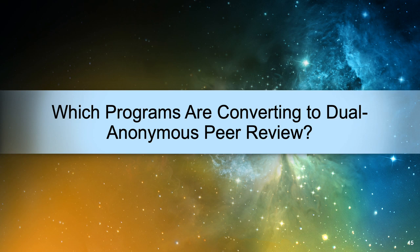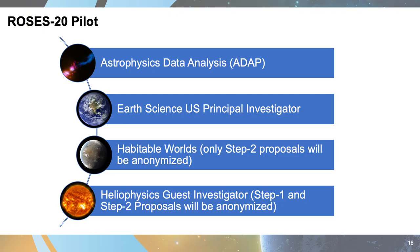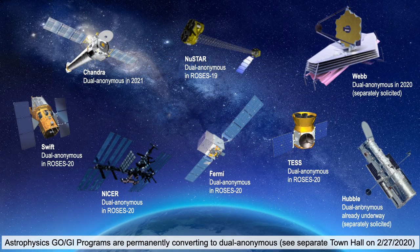Which programs are converting to dual anonymous peer review? In NASA's ROSES 2020 pilot, we have selected four programs — one from each SMD division: the Astrophysics Data Analysis Program (ADAP), Earth Science US Principal Investigator, Habitable Worlds, and the Heliophysics Guest Investigator Open Program. In addition, all Astrophysics Guest Observer and Guest Investigator programs are permanently converting to dual anonymous peer review, and we held a separate town hall for that on February 27th.